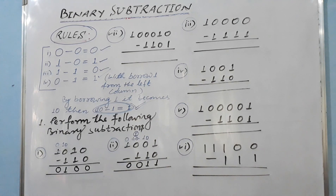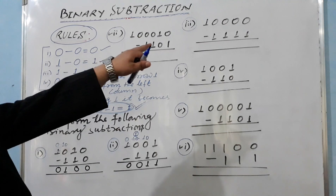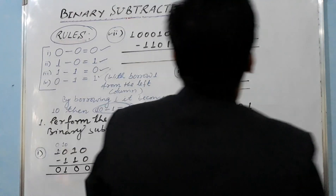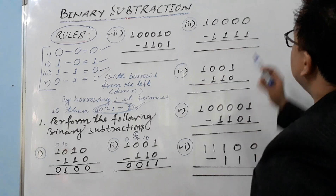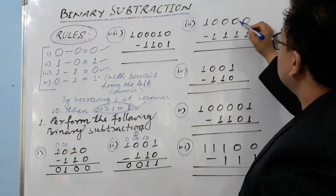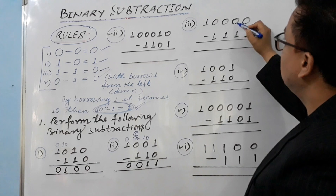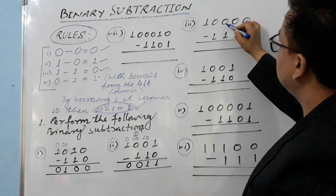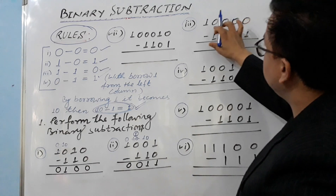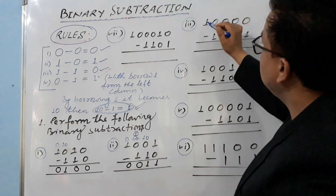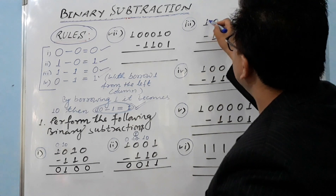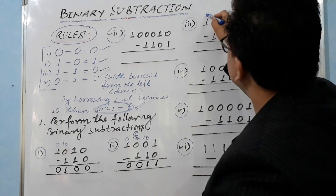Everything now clear? Let's move into Question 3 to get more ideas. Here we see zero, and we need to take borrow. But the left column is also zero, and the one left of that is also zero — so we can't take from there either. We need to go even further left.